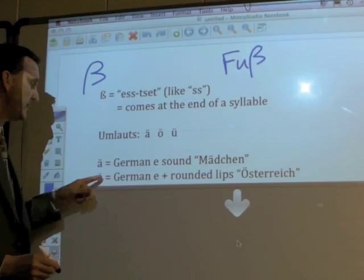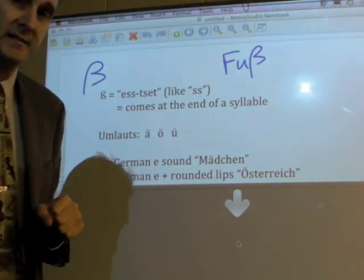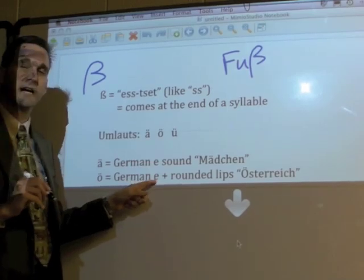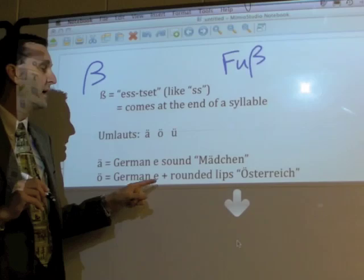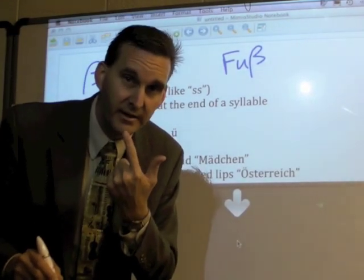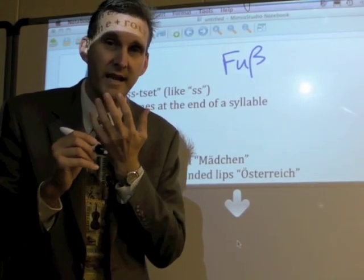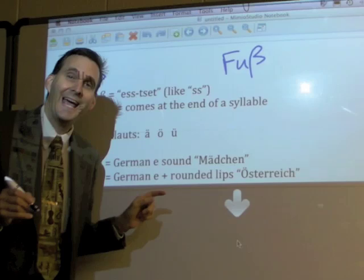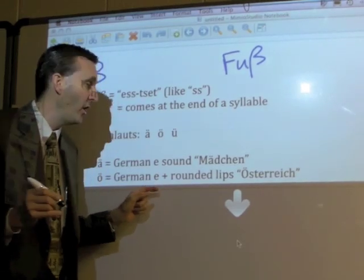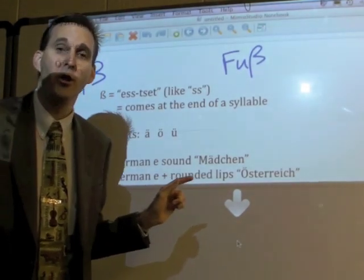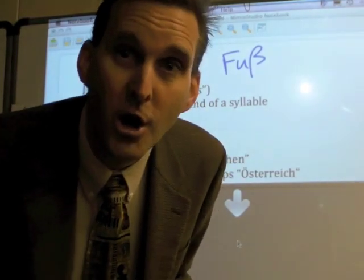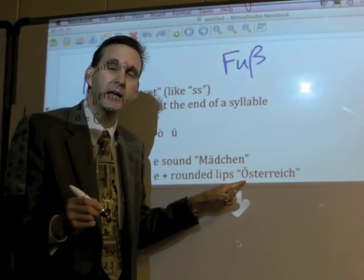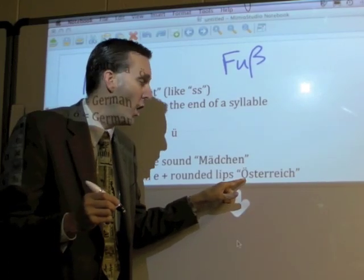The next one is the O-umlaut. This is a sound we don't have in English, but it's a sound you can make — it's not that hard. You do the German E sound — 'ae' — but you keep your teeth and your tongue exactly where they are, and simply start rounding your lips from there, and you'll get that sound. From 'ae', you go: 'ae', 'ö', 'ö'. Like in 'Österreich' — that's that sound.